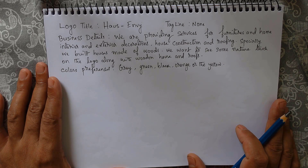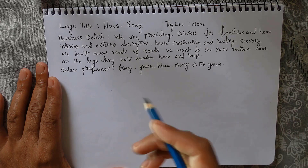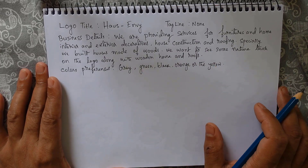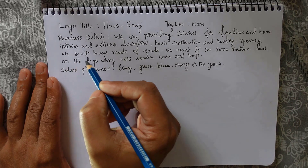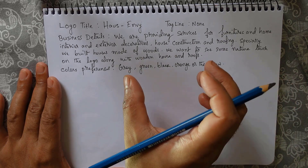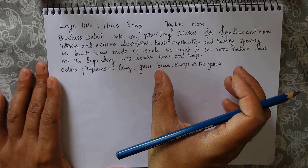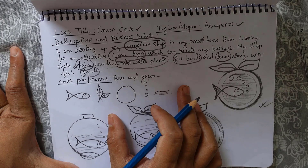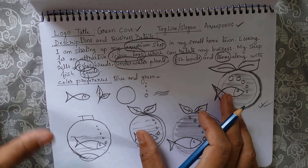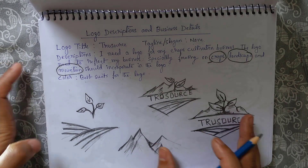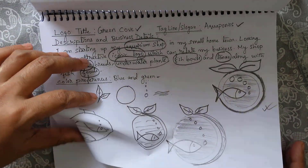Hi, welcome back to Graphic Island Tutorial. In this video, we'll develop a new logo by following the customer description. Here are the details given by the customer, and according to that we need to develop a logo so that it can meet the customer's expectation. These details will help us understand what type of business it is and what type of logo would be the best fit. You can check our previous videos which were in the same format of developing a new logo from a customer description.